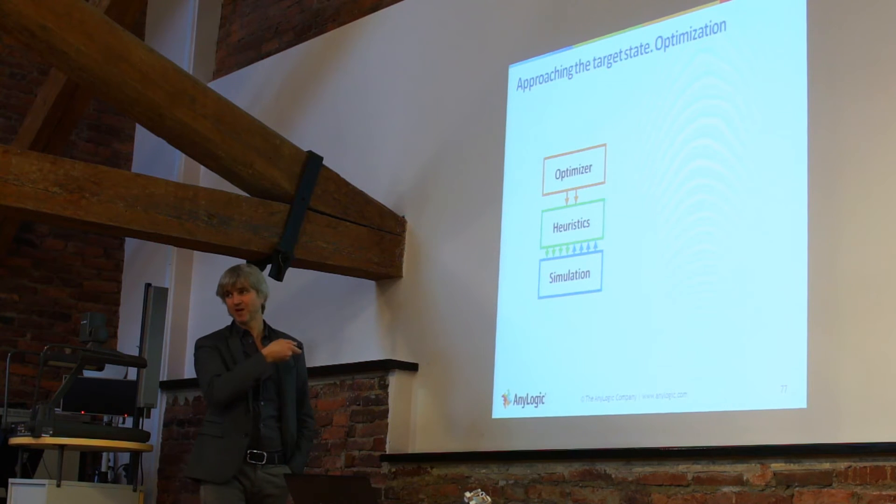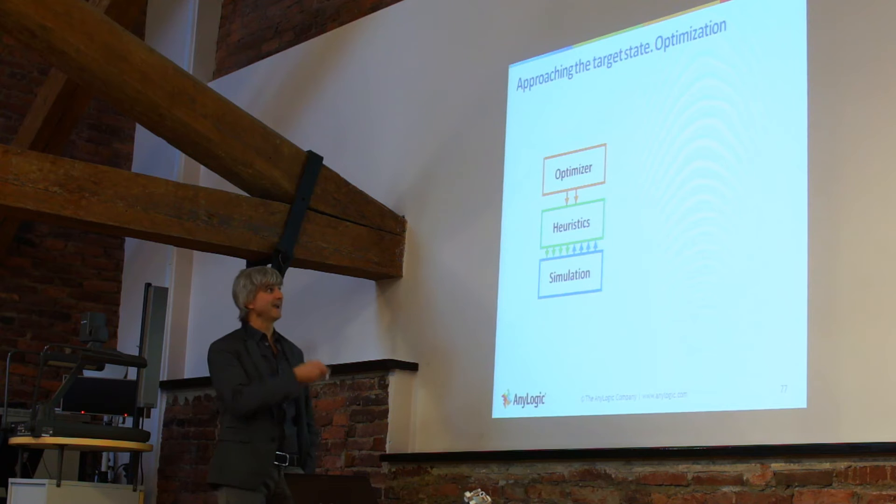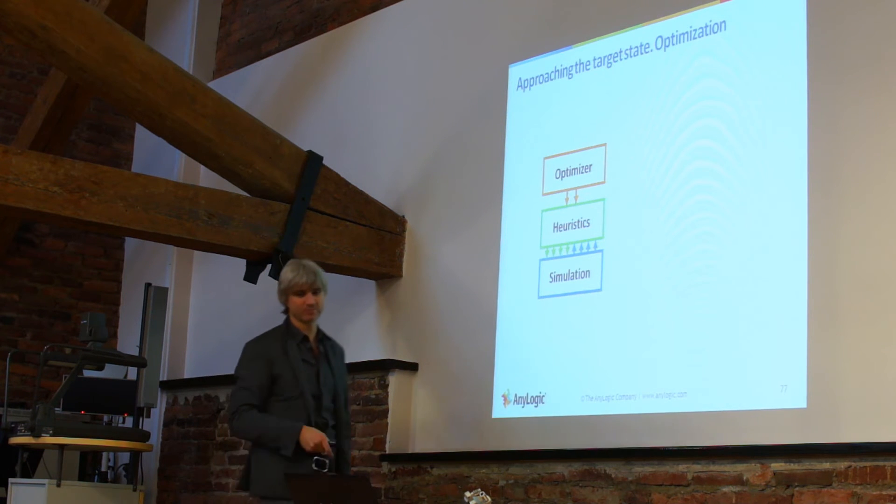The number of parameters is huge. You cannot give optimizer 1,000 parameters, you cannot even give optimizer 20 parameters, that's just too many. So this heuristics level actually reduces the parameter space of the problem from thousands to probably a couple, five, and five can well be managed by the optimizer.